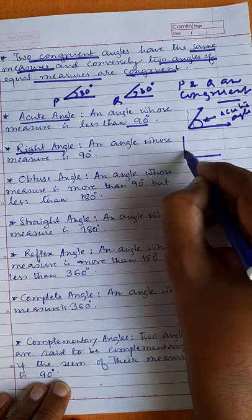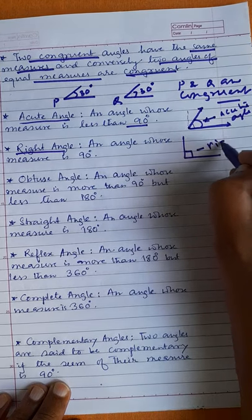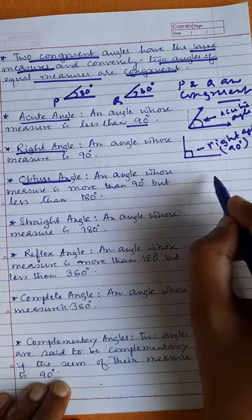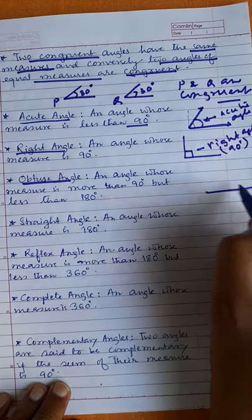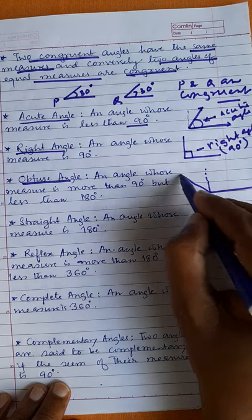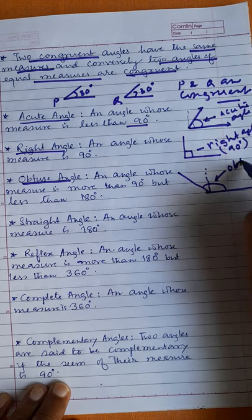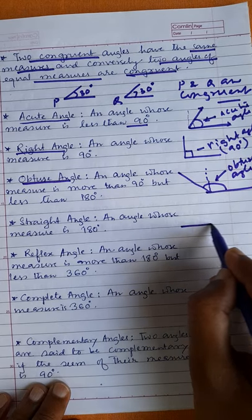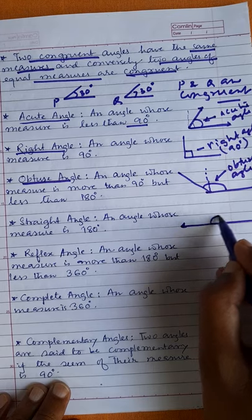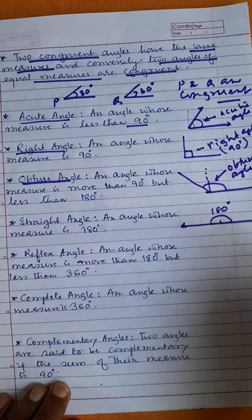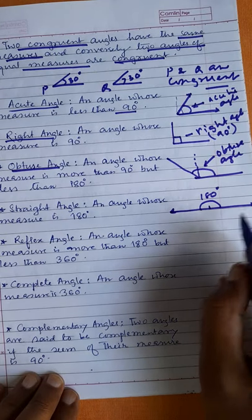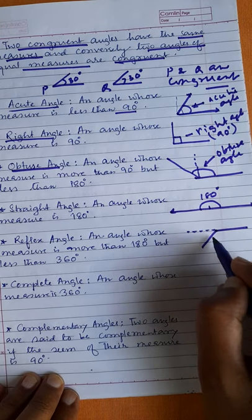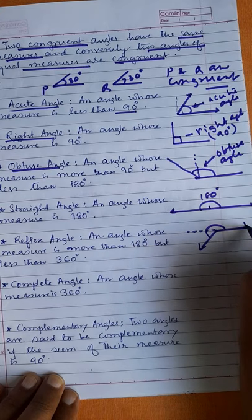A right angle measures exactly 90 degrees. Then obtuse angle — more than 90 degrees. This is 90 degrees and this is more than 90 — this angle is called an obtuse angle. Then a straight angle measures 180 degrees. Then reflex angle — more than 180 degrees. This is called a reflex angle.